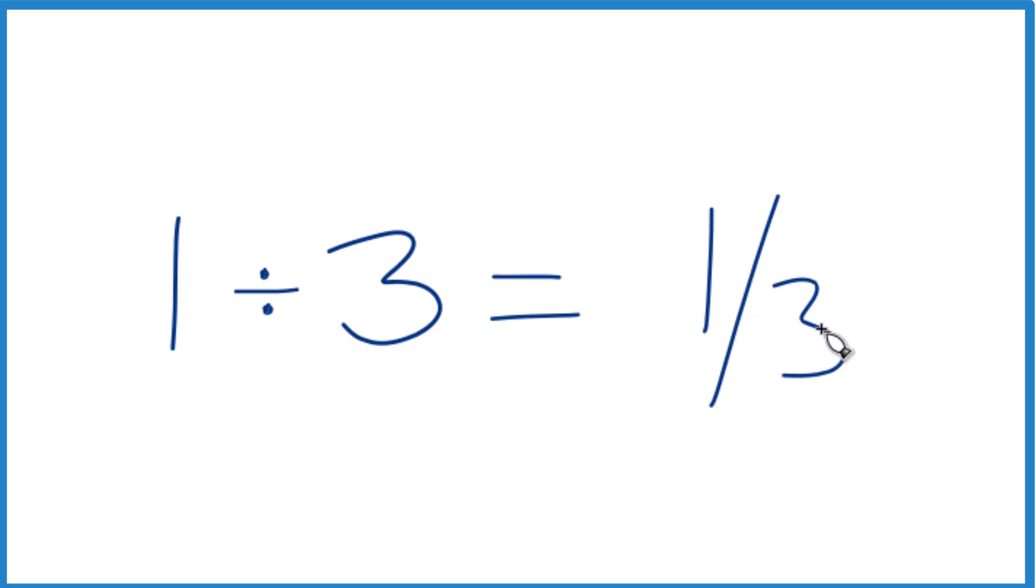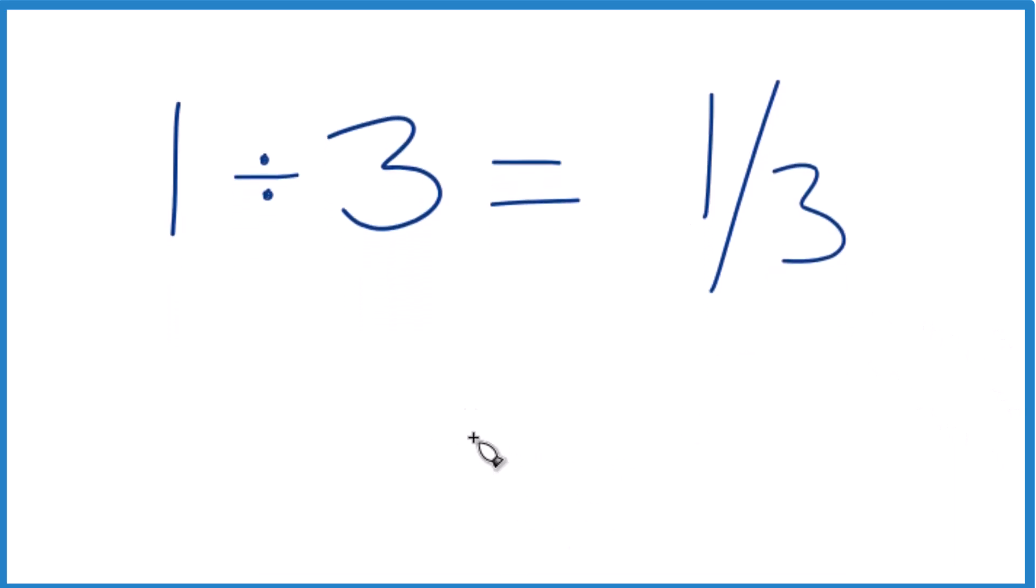If we want to get this as a decimal, though, we're going to have to take 1 divided by 3. So we take 1, and we want to see how many times 3 goes into 1. It doesn't go into 1, so let's put a 0 and a decimal point up here. Then we can make this 10.